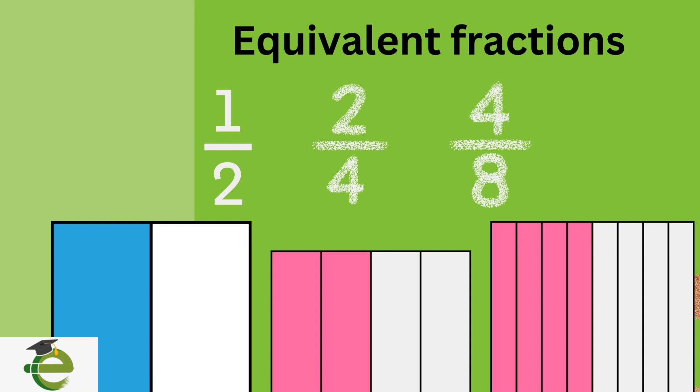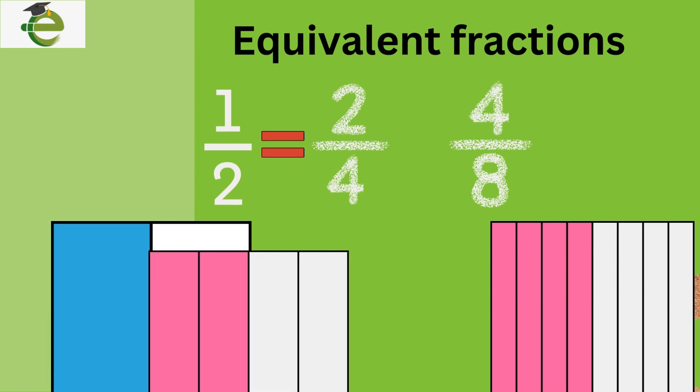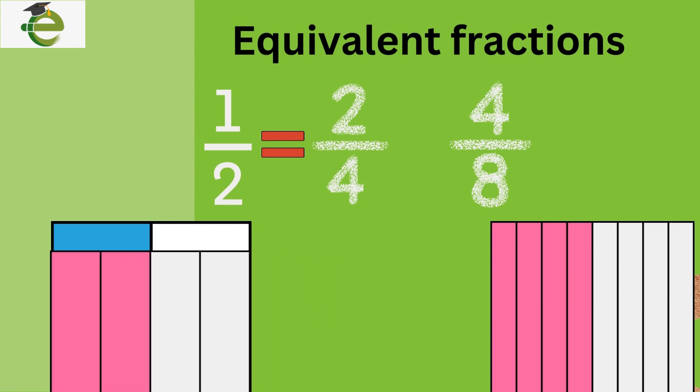Equivalent fractions are fractions that represent the same value even though they may look different. For example, one-half is the same as two-fourths and four-eighths.